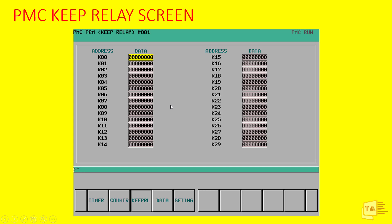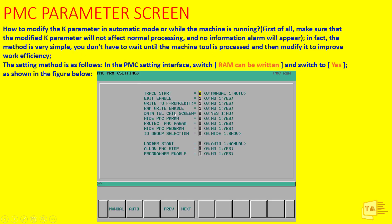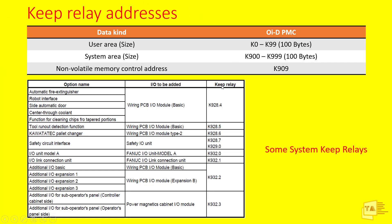If the machine is running in auto mode and you're getting an alarm that needs to be shielded, it is possible to modify the K Parameter while in auto mode. However, to do this you must enable RAM Write Enable — set it to 1. If RAM Write Enable is 0, you cannot change the K Parameter in auto mode. Once you set RAM Write Enable to 1 and confirm yes, you will be able to modify the K Parameters while the machine is running.